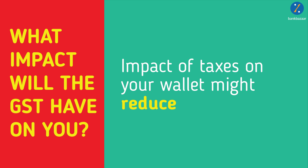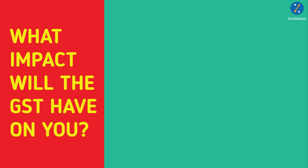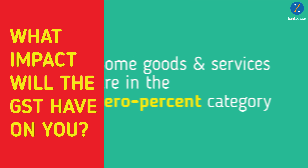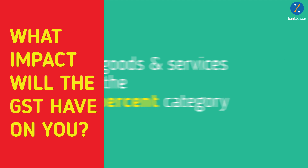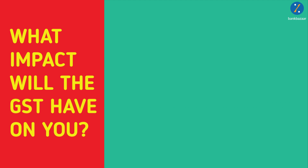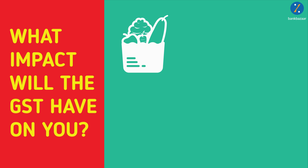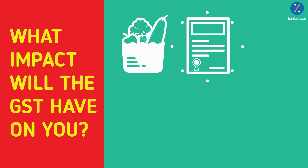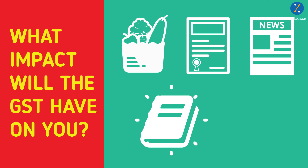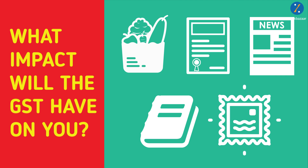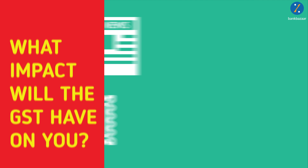Also, there are a number of things that are in the 0% tax category. The list includes fresh fruits and vegetables, judicial papers, newspapers, printed books, and stamps.